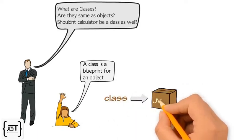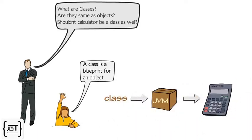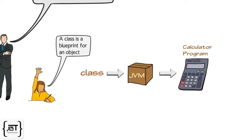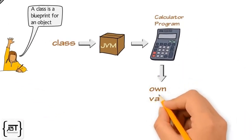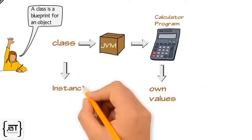It tells the JVM how to make an object of that particular type. Each object made from the class can have its own values for the instance variables of the class.